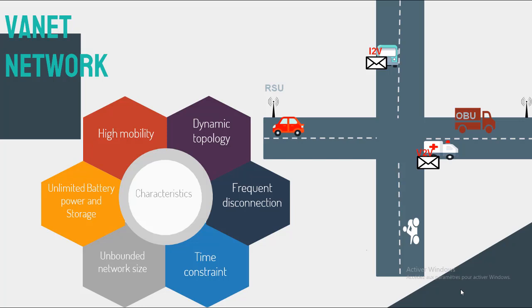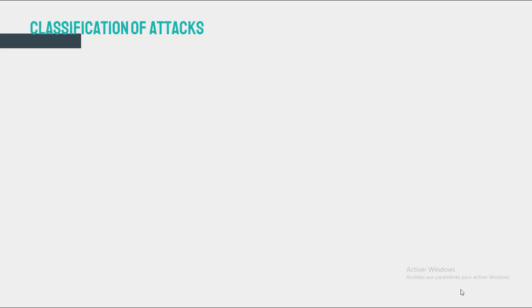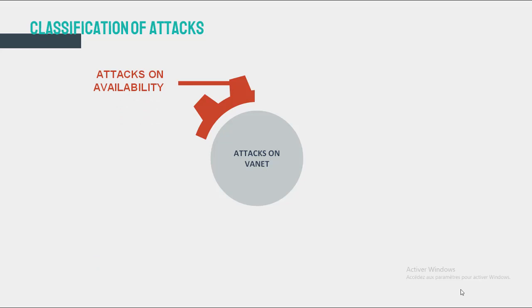The characteristics of VANETs are also considered as challenges. VANET networks are more sensitive to attack due to these characteristics. This leads me to my next point: classification of attacks in VANETs. Attacks on VANETs can be divided into five categories. First, attack on availability: the fact that the network and its resources are available to anyone at any time can lead to security breaches like denial-of-service attacks or even jamming attacks.